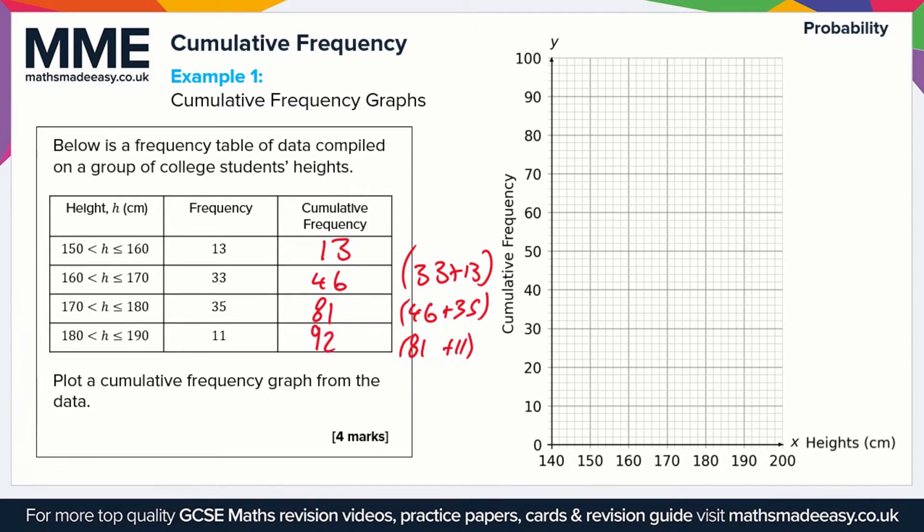And then for the last one, it's 81 plus 11, and that comes to a total of 92. So we have some cumulative frequency values here now, and we can plot a graph with this data.